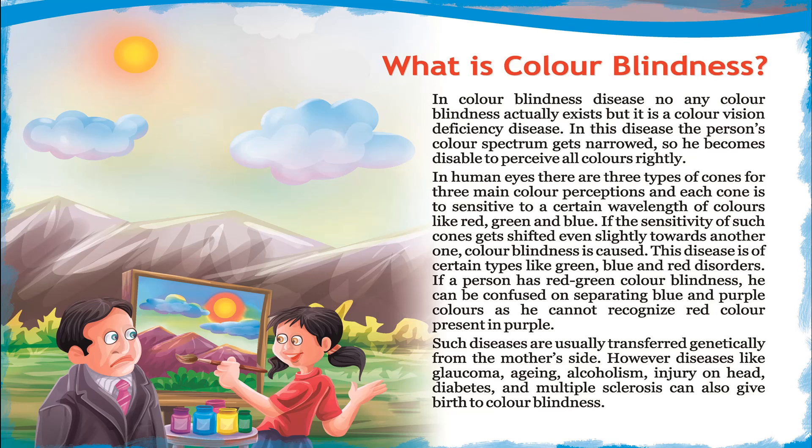In human eyes there are three types of cones for three main color perceptions, and each cone is sensitive to a certain wavelength of colors — like red, green, and blue. If the sensitivity of such a cone gets shifted even slightly towards another, color blindness is caused. This disease is of certain types, like green, blue, and red disorders.